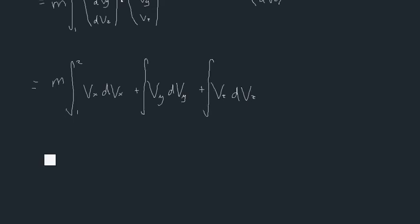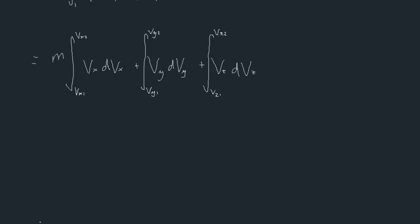So this becomes the integral of vx dvx, plus the integral of vy dvy, plus the integral of vz dvz. The limits of integration for the first term run from vx1, our initial velocity in the x direction, to vx2, our final velocity in the x direction. Similarly for y, from vy1 to vy2, and for z, from vz1 to vz2. And the mass is factored out, multiplying each of these integral signs.